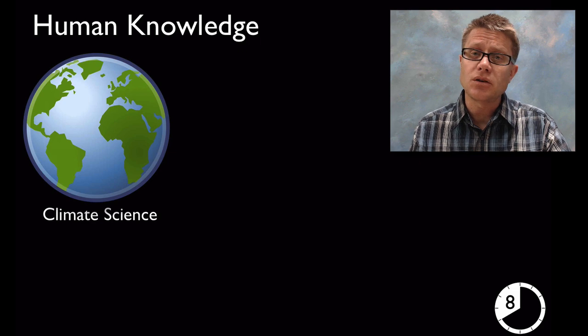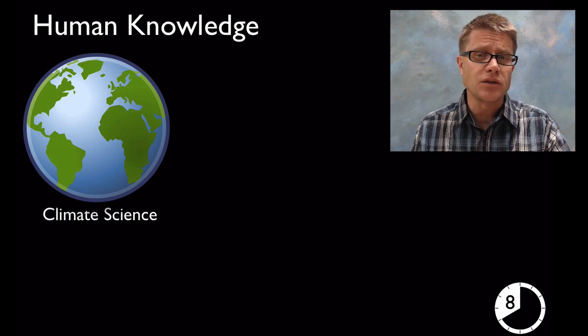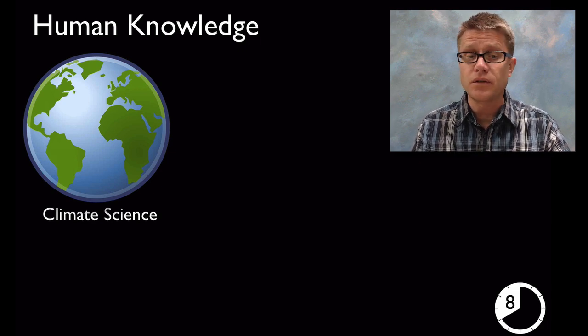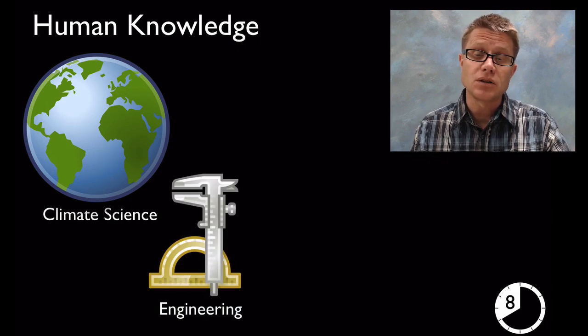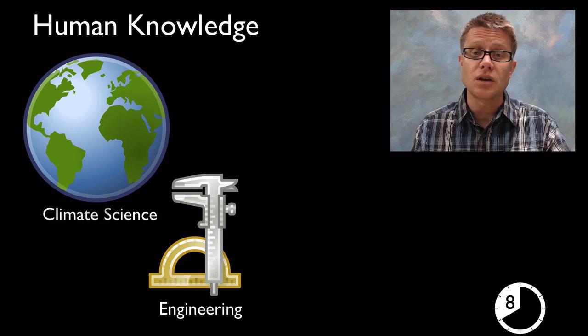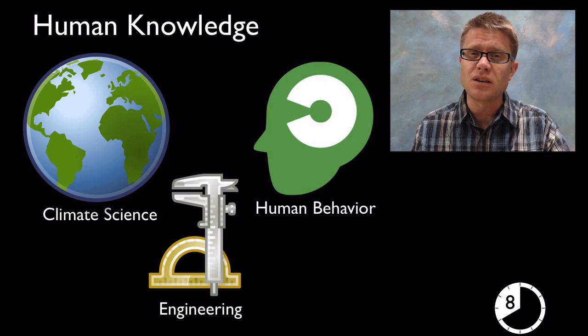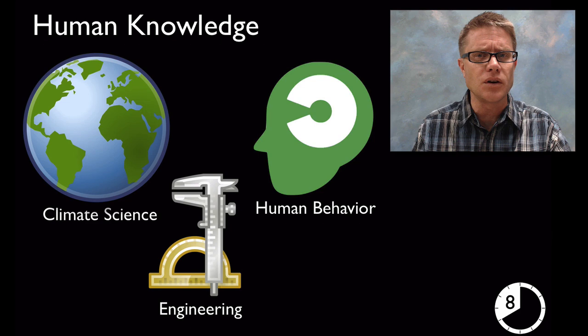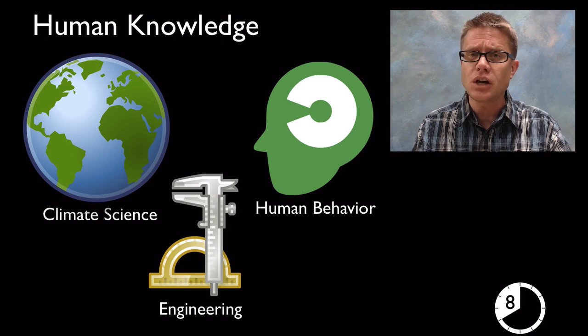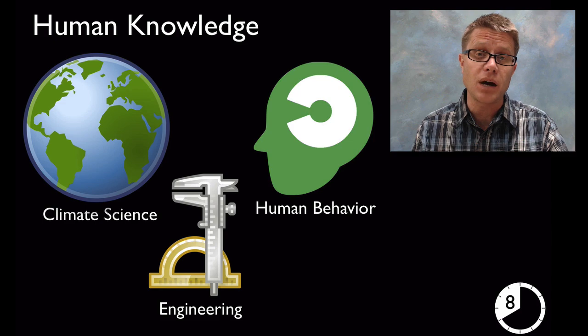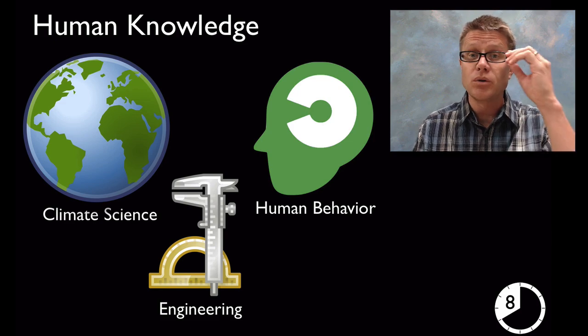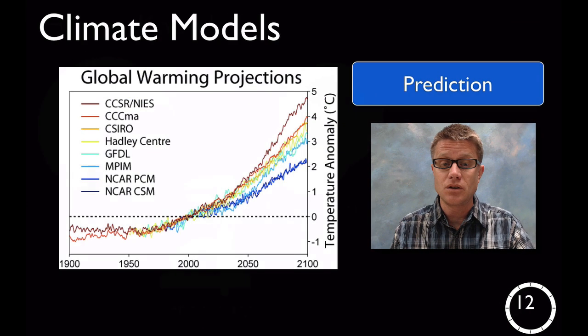We should start talking about human knowledge and how the knowledge we have is going to be incredibly important for our future. We need to have knowledge of the climate sciences, and our models help us predict that. We need to have knowledge in engineering so we can engineer solutions to some of these problems. And we also have to understand humans and human behavior, because we're going to need to change some minds. We're going to need to point out to humans that we're having an impact on our planet. And to do that we really have to understand what's motivating humans.